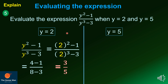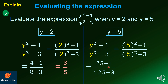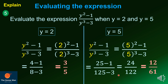On the other hand, if y equals 5, substitute into y squared minus 1 all over y cubed minus 3. Since 5 squared equals 25 and 5 cubed equals 125, we get 25 minus 1 all over 125 minus 3, which is 24 over 122. This is still reducible — dividing both by 2 gives 12 over 61.